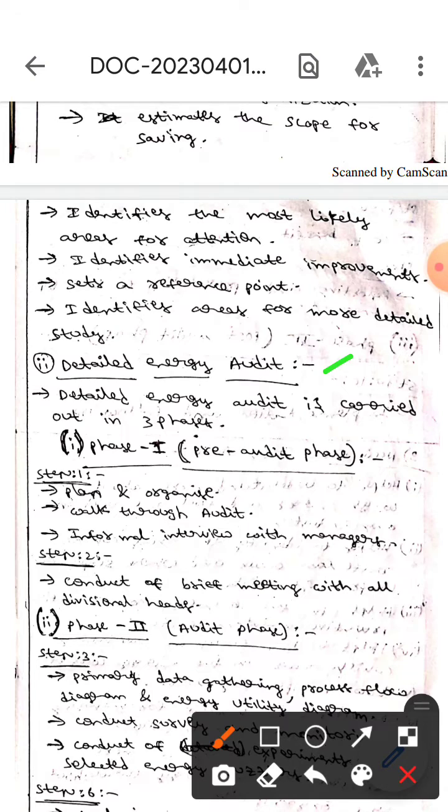The second type is detailed energy audit. This detailed energy audit has three phases. The first one is preliminary pre-audit phase, which is phase one. In that, there are two steps. Step one is plan and organize, then walk through the audit, then informal interview with managers. Step two is conduct a brief meeting with all divisional heads.